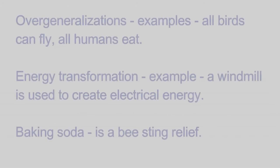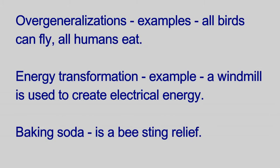Overgeneralization examples: all birds can fly, all humans eat. Energy transformation, example: a windmill is used to create electrical energy.